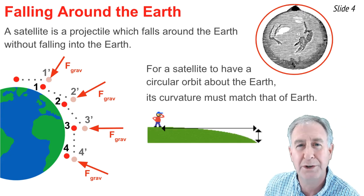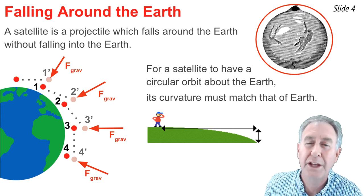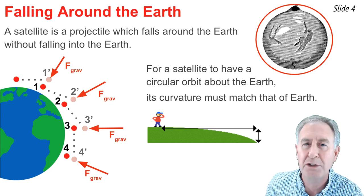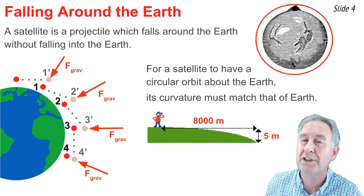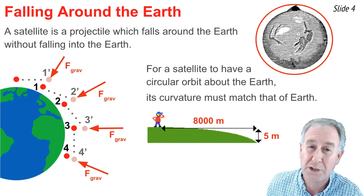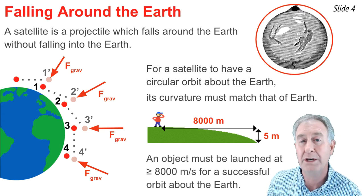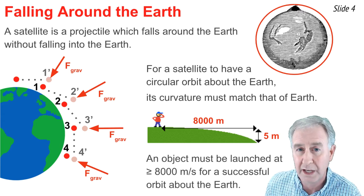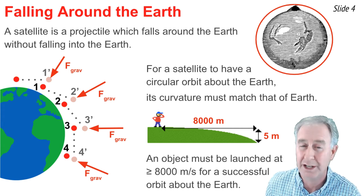If you were to stand on Earth's surface and look out horizontally along the surface of the Earth, you would note that for every 8,000 meters, horizontally, the Earth curves downwards 5 meters. The significance of 5 meters is that's the distance that a projectile falls in one second. So if you could shoot a projectile that travels 8,000 meters horizontally in one second, it would fall downwards towards the Earth, but never touch the Earth.